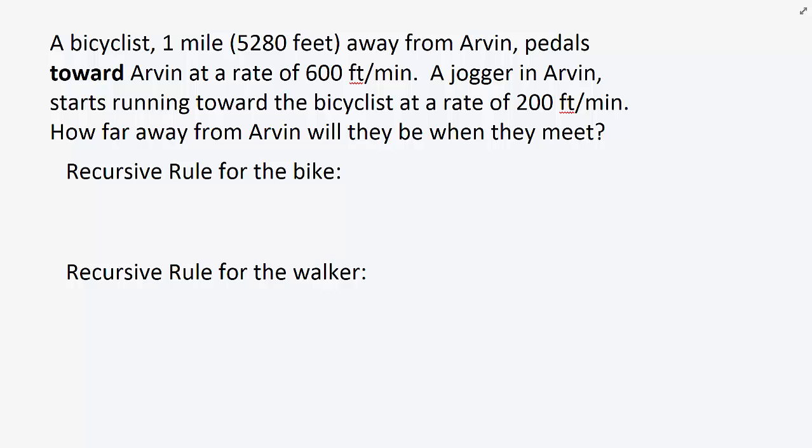A jogger in Arvin starts running toward the bicyclist at a rate of 200 feet per minute. How far away from Arvin will they be when they meet?